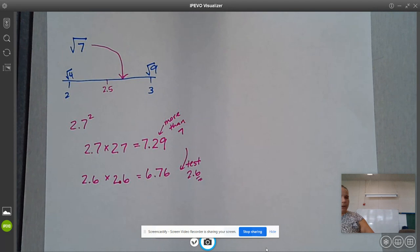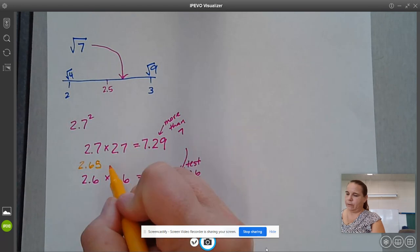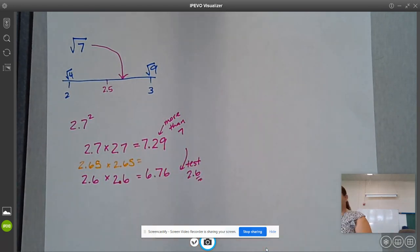Well, these are both really close. To figure it out, it might be somewhere in between. It could be 2.65 times 2.65. That might be closer.